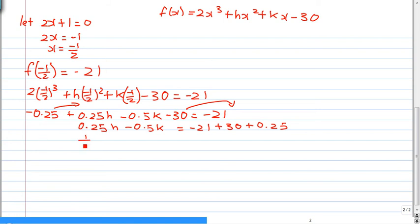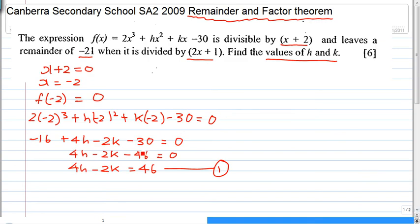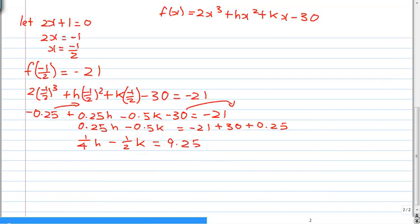Minus 21 plus 30, plus 0.25. Can I convert this to a fraction? And we simplify this. Press your calculators everyone, you will get 9.25. Now we've got two equations. We can solve it via simultaneous equation. The first equation is 4h minus 2k equals to 46. Let me just write down here. 4h minus 2k is equals to 46. So that's equation 1.